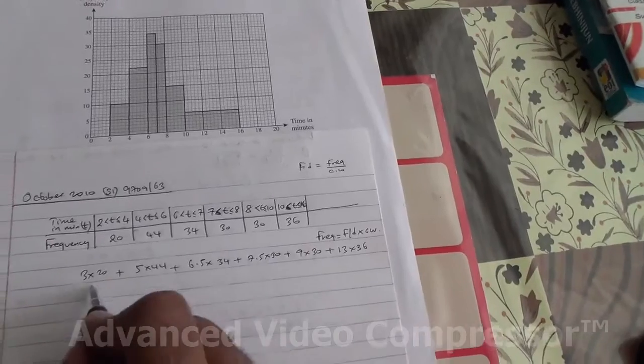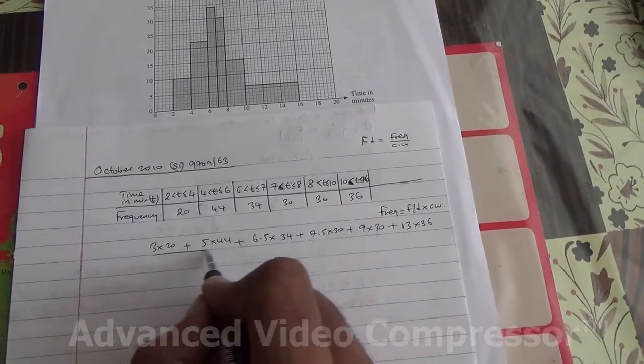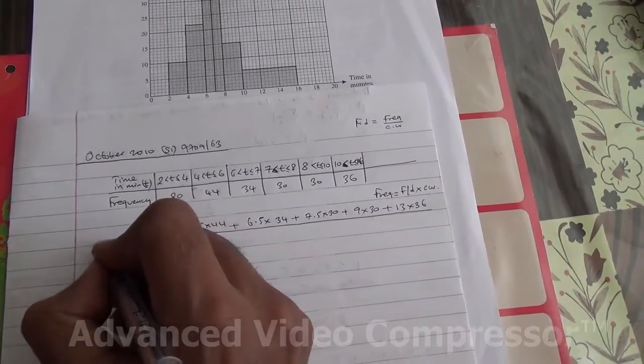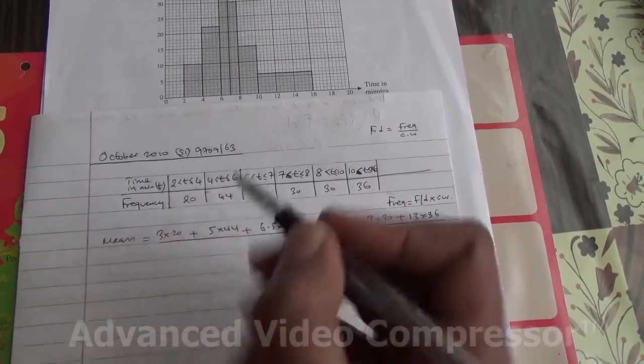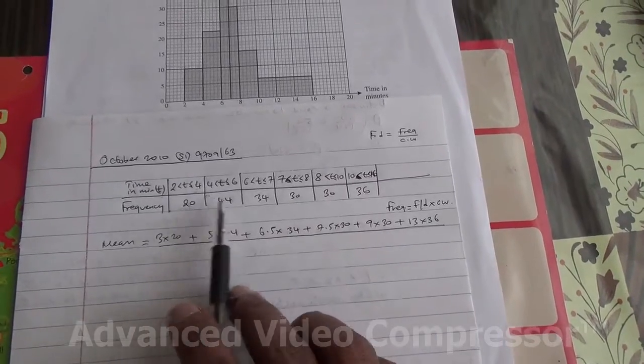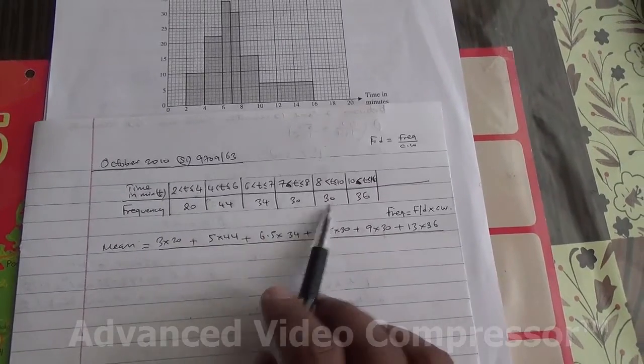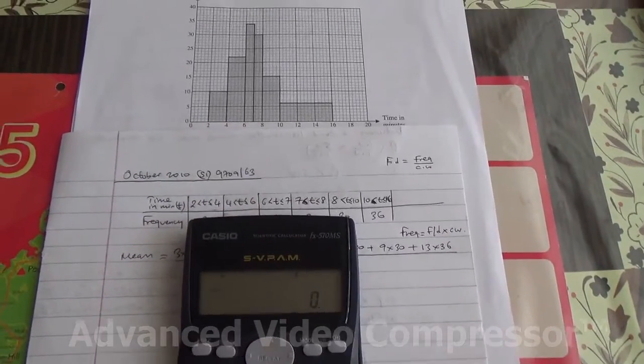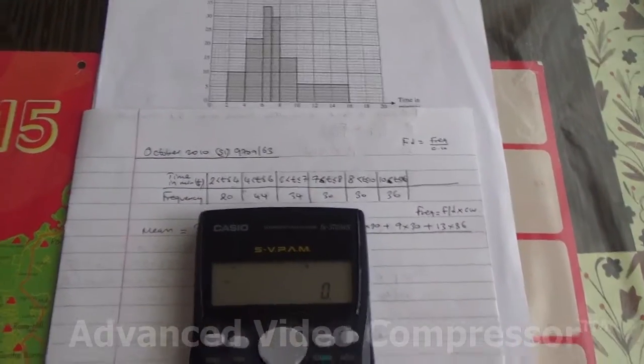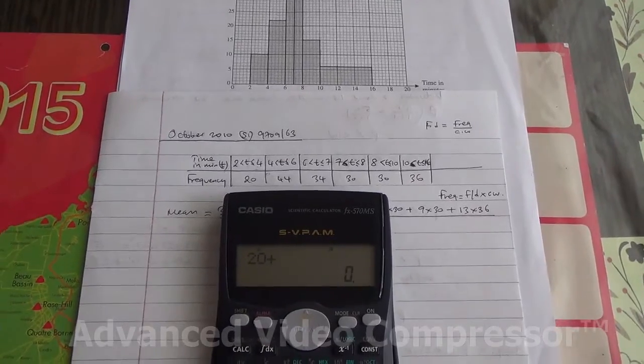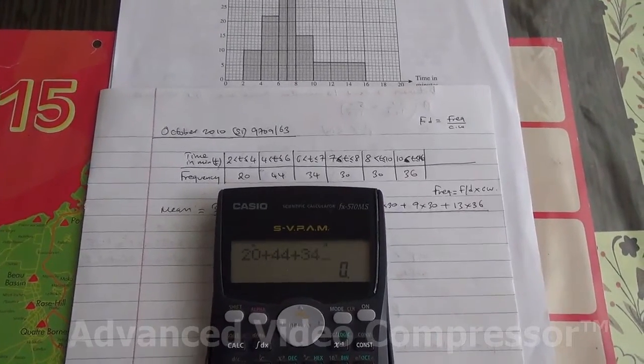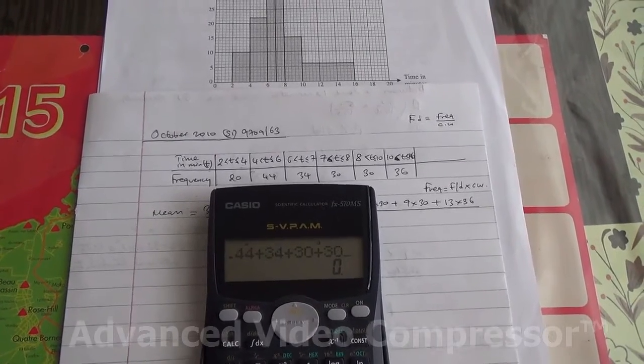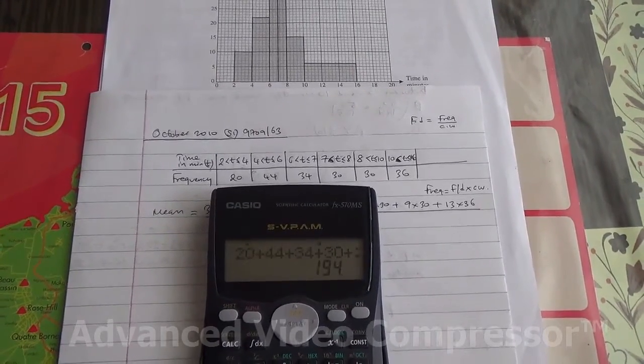Now you're going to take the total of all of that, divide by the total number of frequency. The frequency is going to be 20, 44, 34, 30, 30, 36. Let's do that first. So 20 plus 44 plus 34 plus 30 plus 30 plus 36 equals 194.